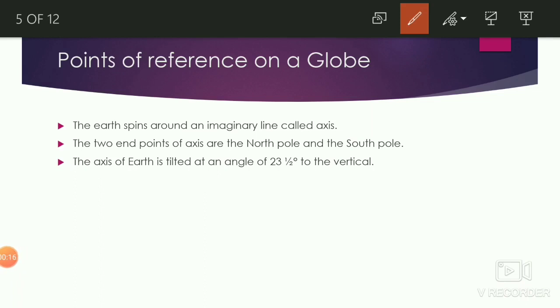Points of references on globe. We all know what the axis is. The Earth spins around an imaginary line called the axis. The two end points of axis are the north pole and the south pole. The axis of the Earth is tilted at an angle of 23.5 degrees to the vertical.